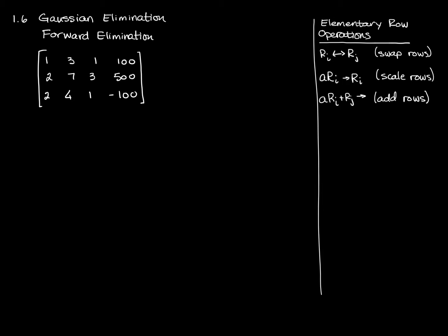I can multiply row i, any row, by any real number, and that includes fractions and negative numbers. So I could turn, say, this first row here into 393, 300, just by multiplying by the number 3.